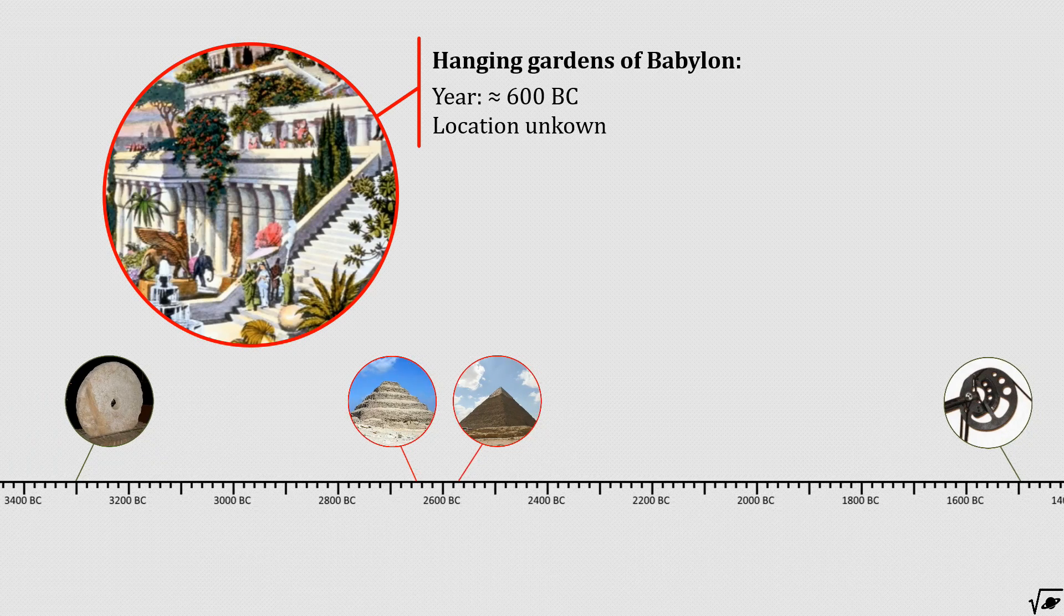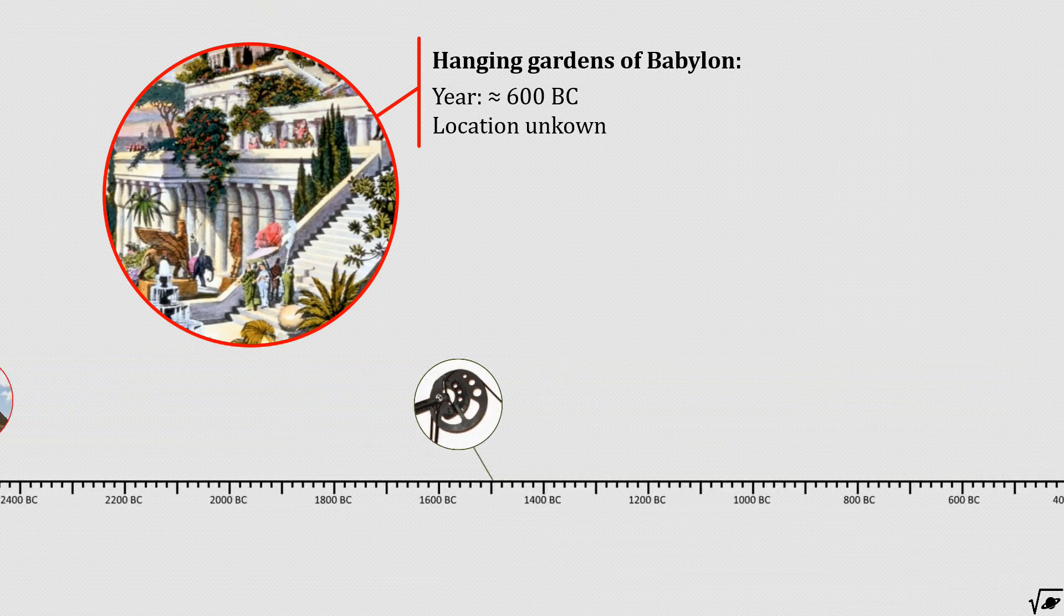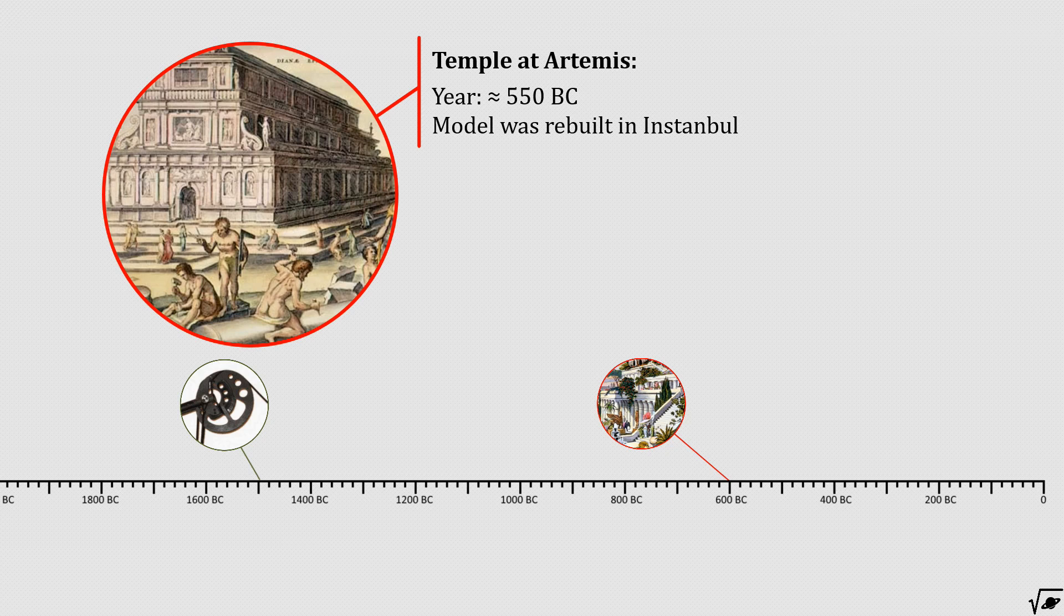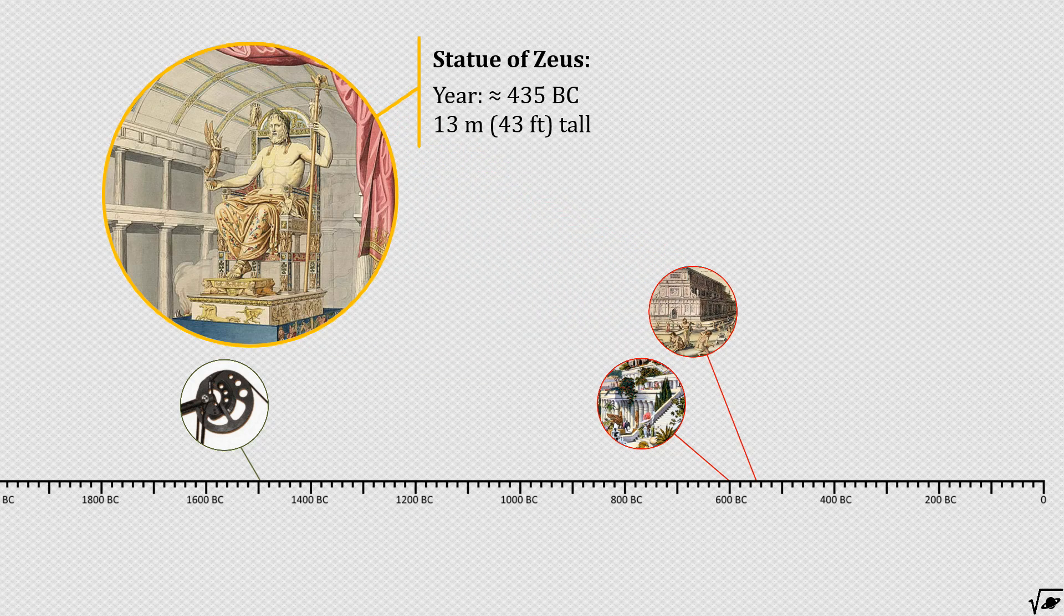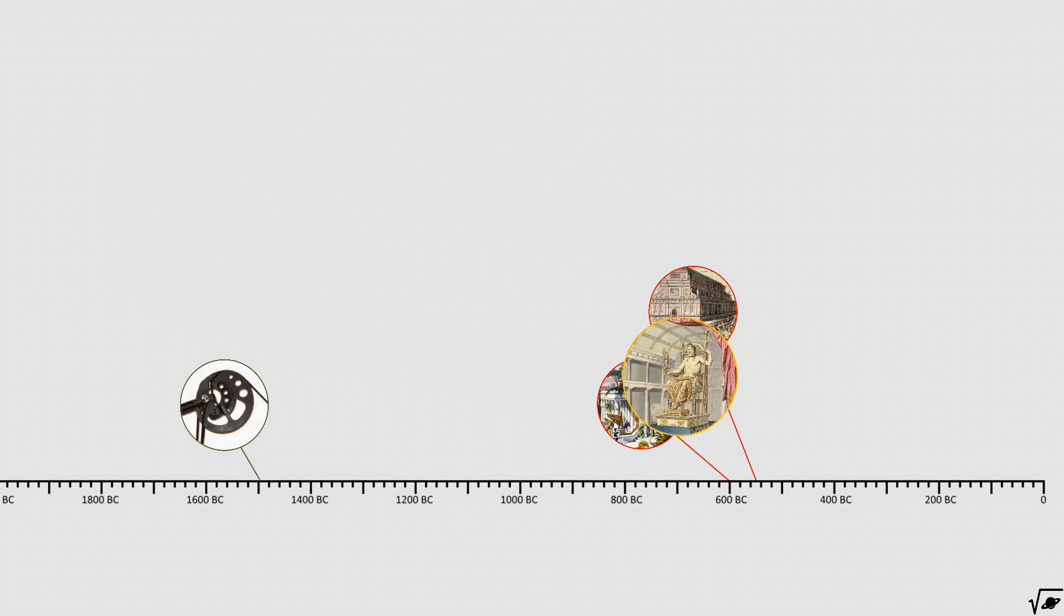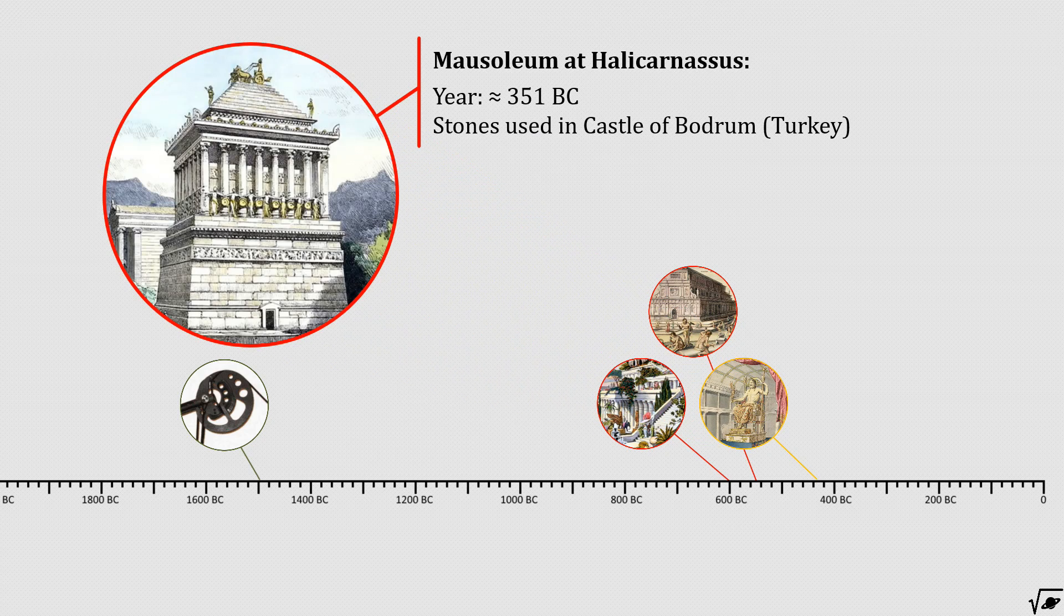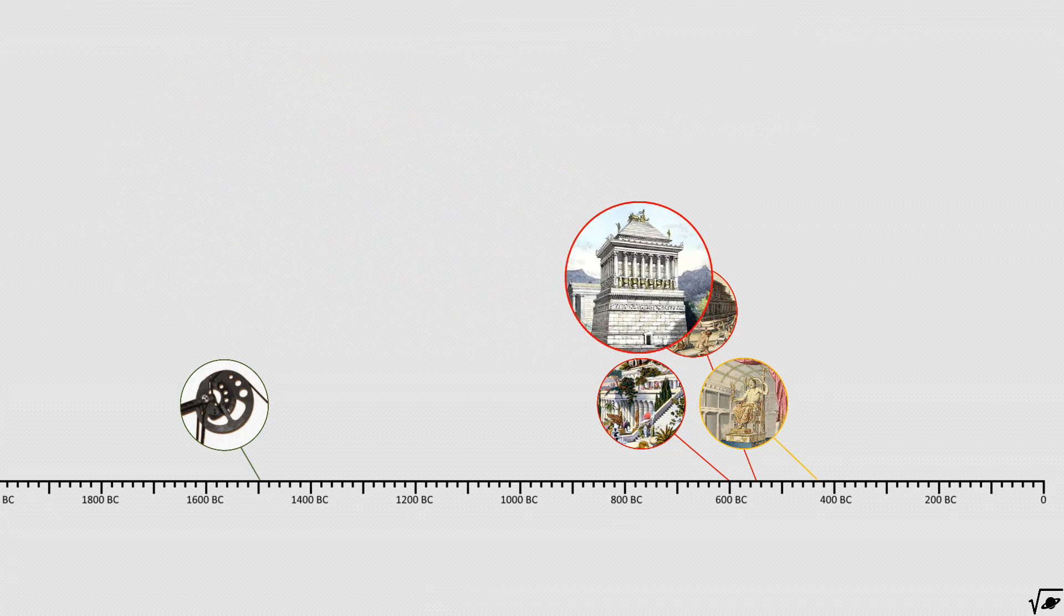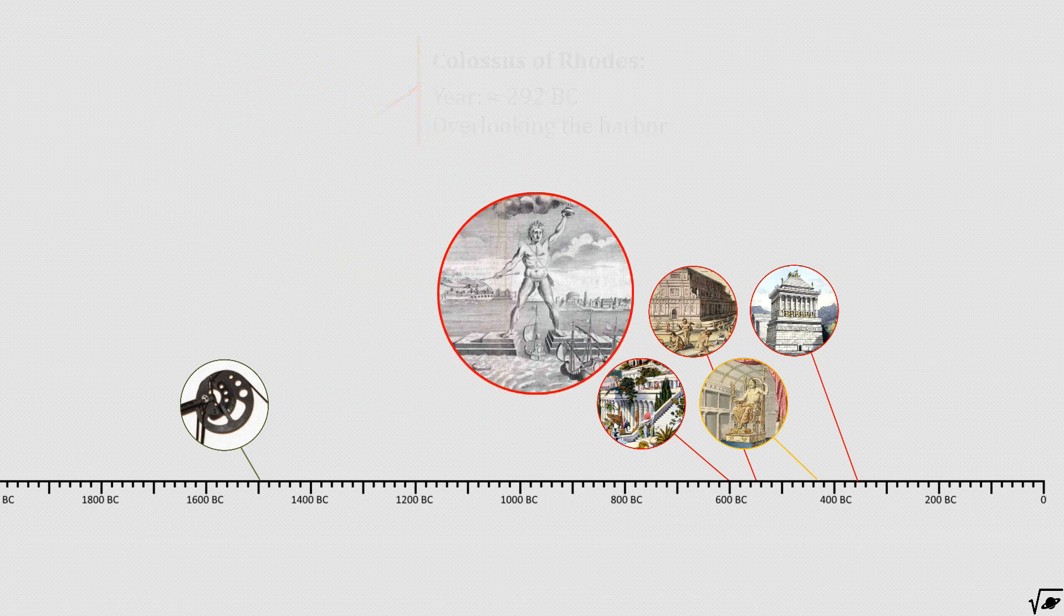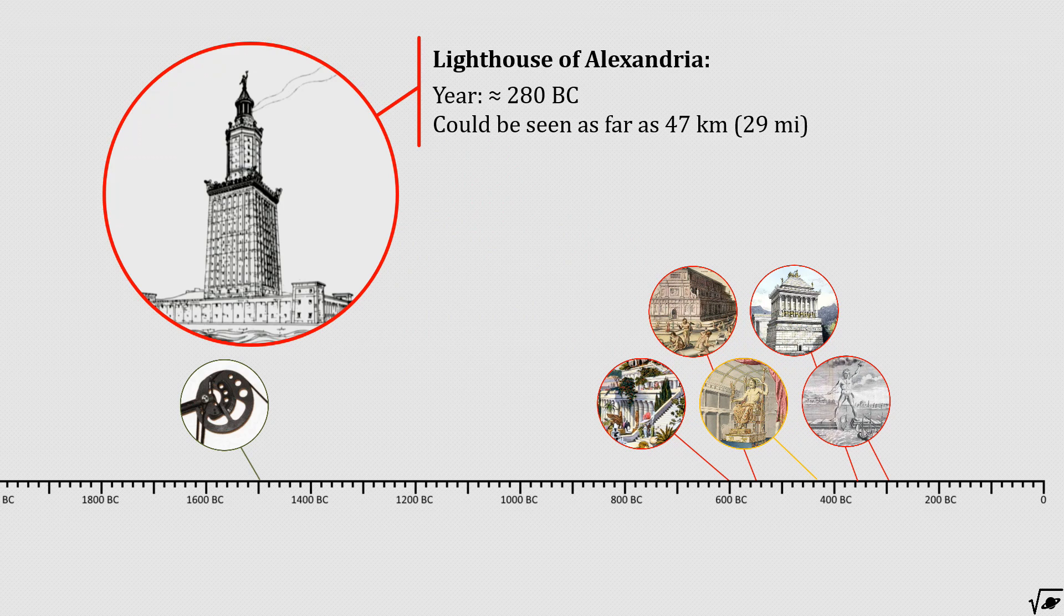The others were the Hanging Gardens of Babylon, the Temple of Artemis, the Statue of Zeus at Olympia, the Mausoleum at Halicarnassus, the Colossus of Rhodes, and the Lighthouse of Alexandria.